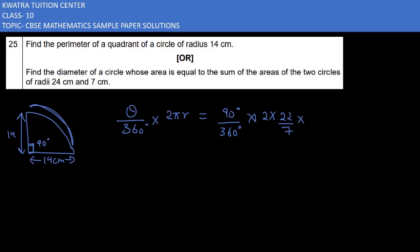For the arc length, 90 over 360 simplifies to 1 over 4. You can cancel 4 with 2 and 2, so the arc length works out to be 22 cm.